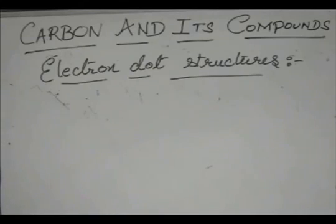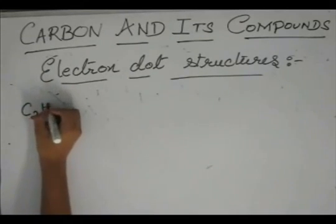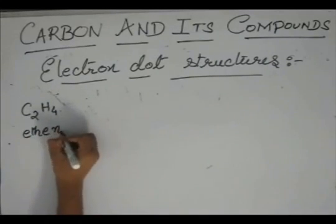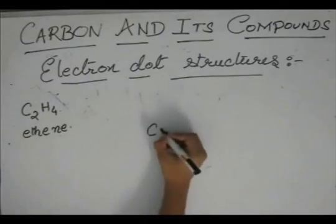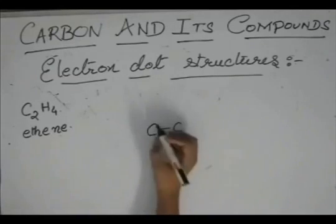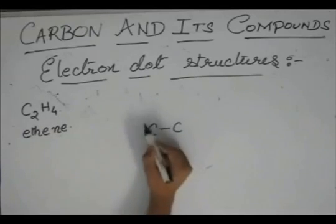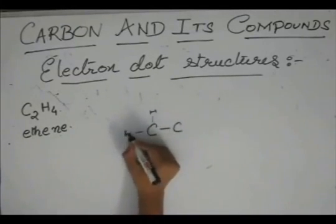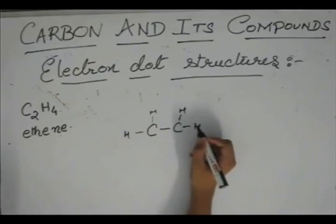We have a compound C2H4, which is called ethene. What happens in this compound? First, I drew the C. Now, there are only 4 hydrogens, so we cannot have 6 hydrogens over here. We have space for only 2 hydrogens on each carbon atom.